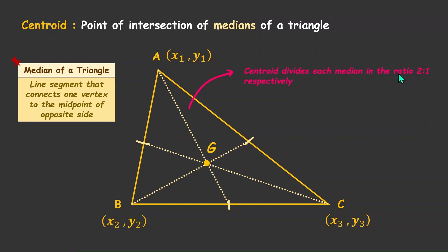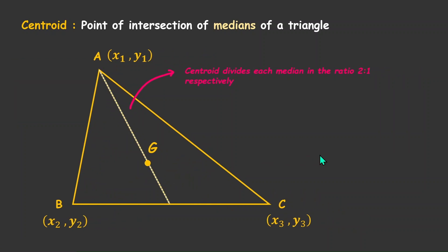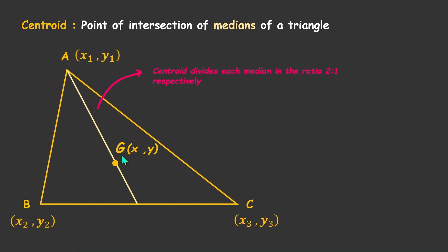Now, the minute we have a ratio in the picture, it becomes clear that I can use a section formula here. To use the section formula, let's focus on just one median right now. Let's say the coordinates of our centroid is (x, y). I know the ratio is 2:1, and I know one coordinate is x1, y1. If I get the coordinate of the second point, then I can get the coordinate of G, the centroid — because the ratio is known, I just need the coordinates of the second point. And that is also known, because we have the information that it is the midpoint of BC.